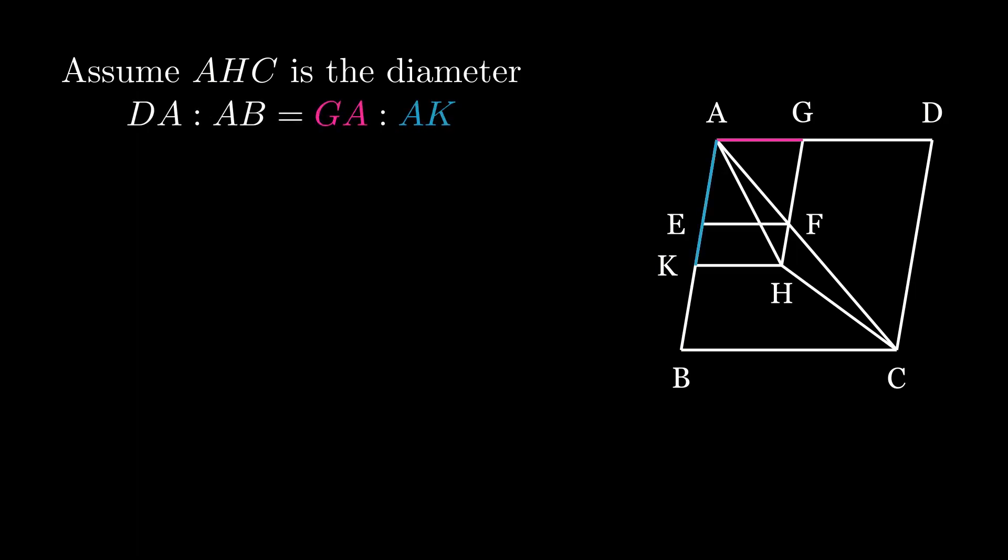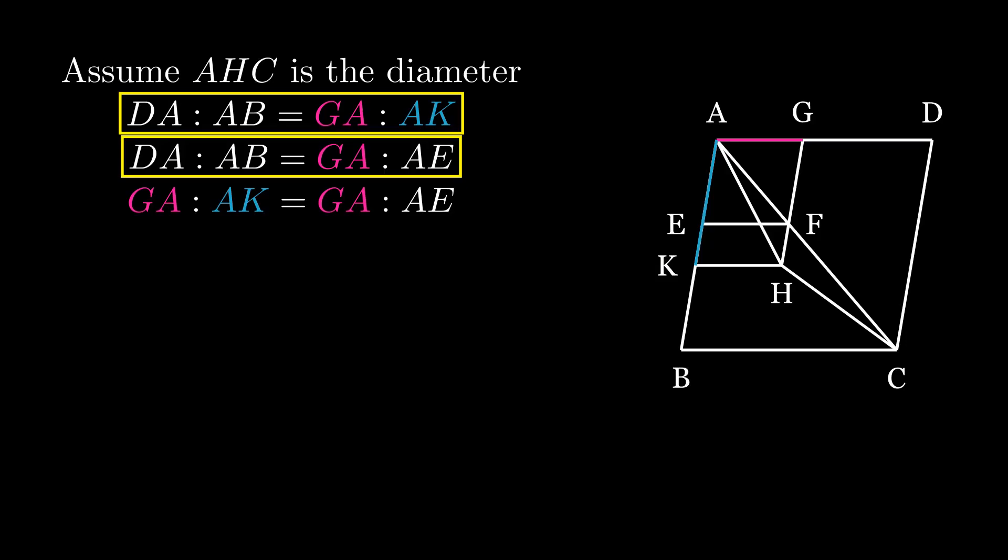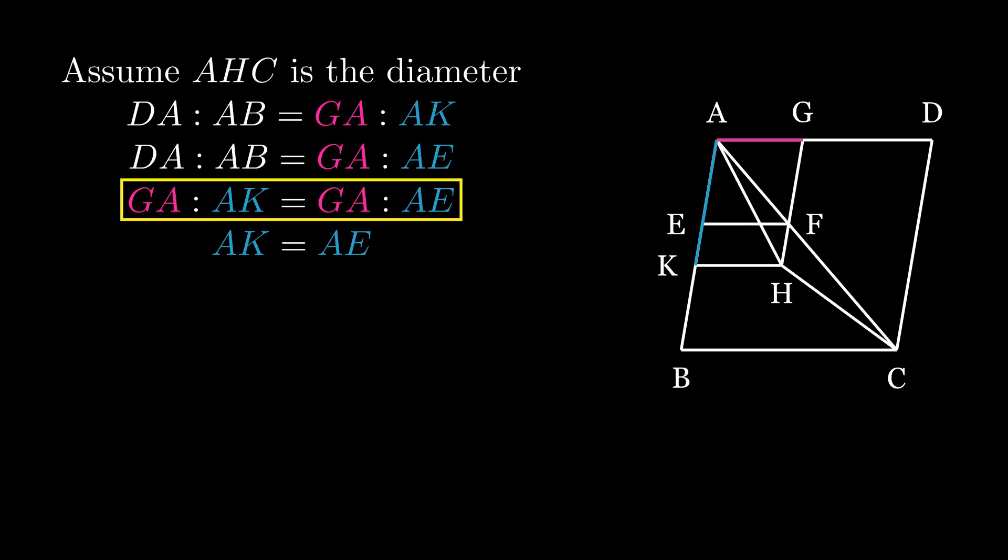So DA to AB is proportional to GA to AE. But parallelograms AF and AC are also similar, so DA to AB is proportional to GA to AE, which means GA to AK is proportional to GA to AE. So AK is equal to AE, which is a contradiction.